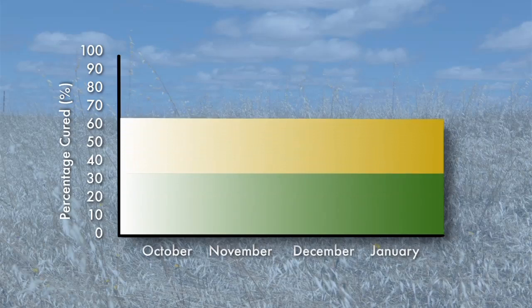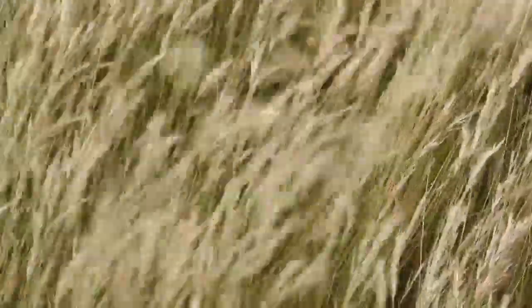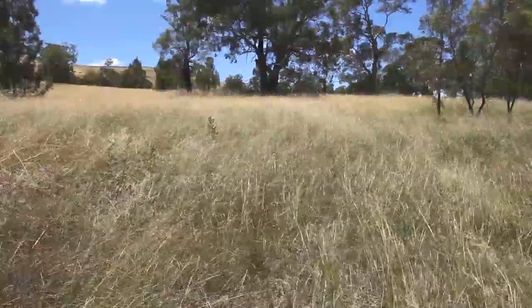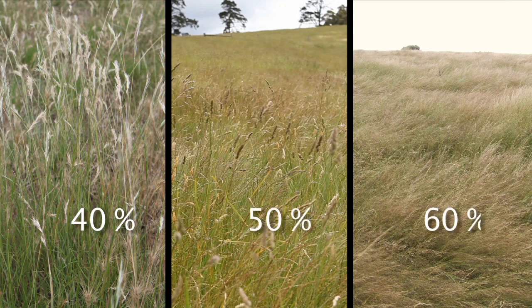Now let's look at the yellow phase. This is when the curing is between forty and sixty percent. Here is an example of forty percent cured where the yellowing is well underway. Here is an example of grass at sixty percent cured — as you can see, half the stems have lost some of their seed. Grass at fifty percent cured is about half yellow, half green and is continuing to drop seed. Here are some images of fields with grass at forty, fifty and sixty percent cured.